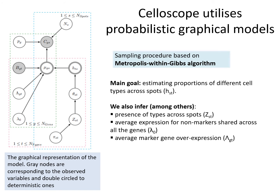In this project, we use probabilistic graphical models and propose a sampling procedure based on the Metropolis-Hastings within Gibbs algorithm to estimate model parameters. Although our main goal is to estimate proportions of cell types, we also infer presence of types across spots, average expression for non-markers shared across all genes, and average marker gene over-expression.